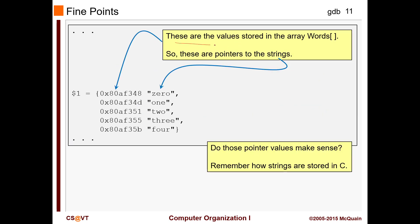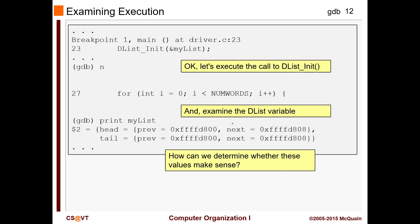These are the values stored in the array `words` - it stores where the strings are stored. These are the values of the pointers, showing what they are pointing at. You have gone through pointers many times; at this point it should be ingrained. Then we continue. `n` basically means next - you can write `next` or `n`, whichever you like. Then we have our for loop and inside it we are going to check our list.